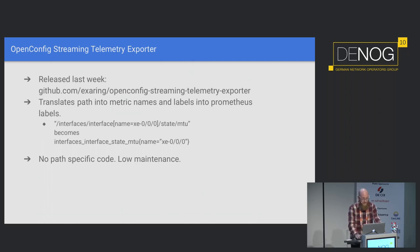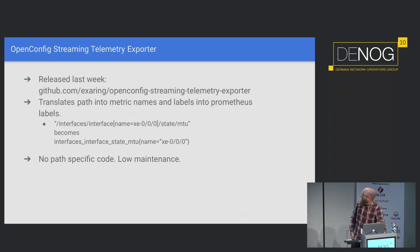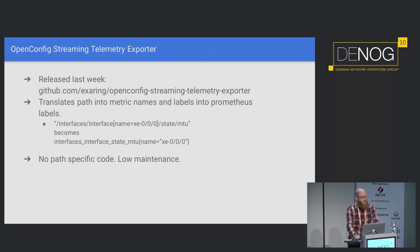Last week I released the OpenConfig streaming telemetry exporter on GitHub — the URL is there. It works by translating those paths, like the one you see on the top, into the Prometheus metric name and labels you see on the bottom. It just exports all metrics that are being received automatically, so there is zero configuration you need to do on this part. All metrics that come in via OpenConfig streaming telemetry are exposed to Prometheus automatically. There is no specific path code, so there's not much to do here in terms of maintenance.